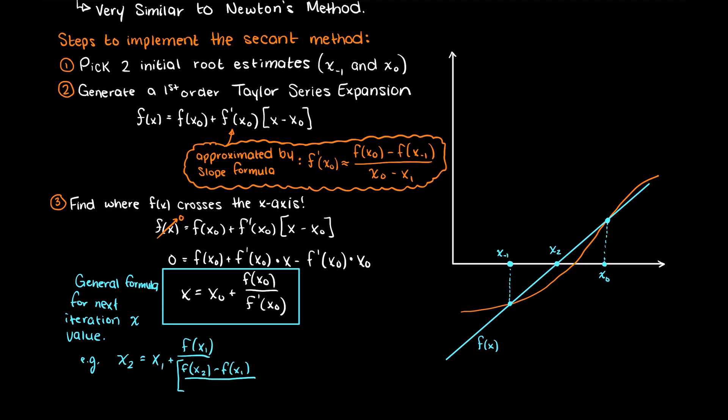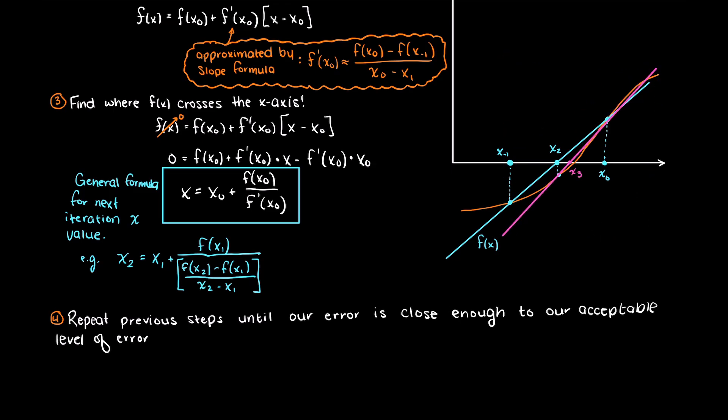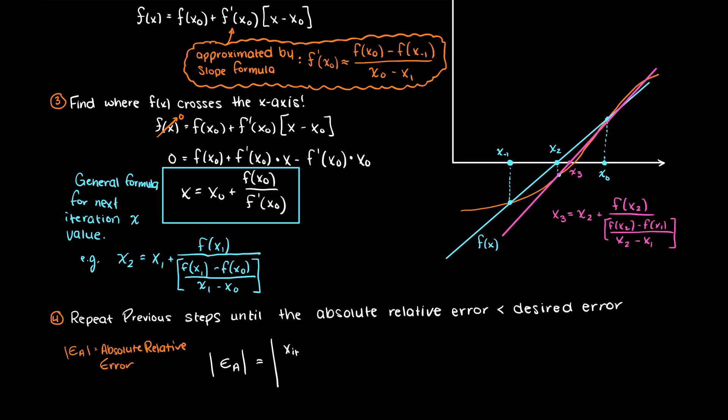Then we just repeat the previous two steps until where we cross the x-axis is sufficiently close to our acceptable error. And we can find the error using this formula like so.